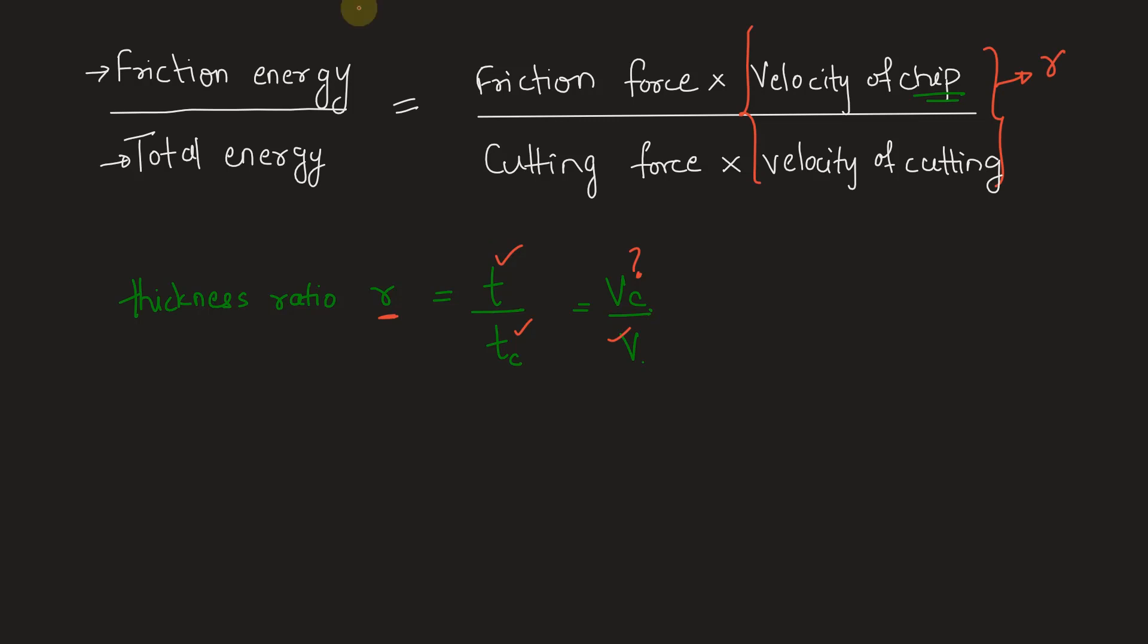Finding R, we have R equals T by Tc. T is 0.01 divided by Tc which is 0.015. We can substitute this ratio later.